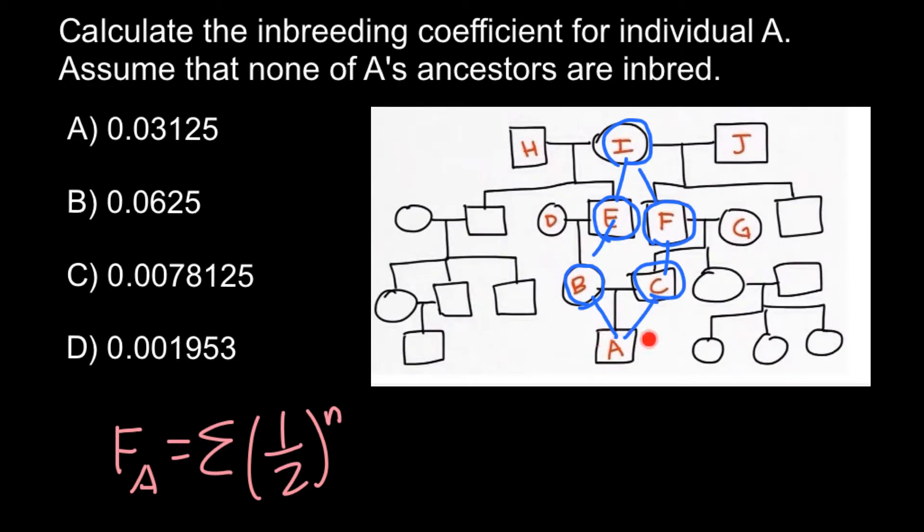And we do not count individual A, our proband for whom we calculate the inbreeding coefficient. We only start with one parent and end with another parent. So we got five here.